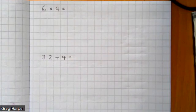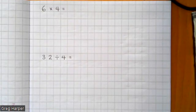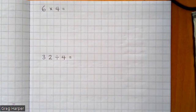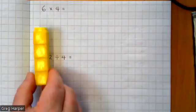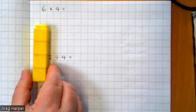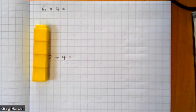So the first question we have here is multiplication and we're doing six multiplied by four. There are several ways you can do this — I'm going to show you three. The first way is using physical resources. Six multiplied by four is the same as saying six lots of, or six groups of four. So I've got my multi-link here and I've arranged it into groups of four. To solve this sum I need six groups of four, and then I'll count my total to answer six multiplied by four.